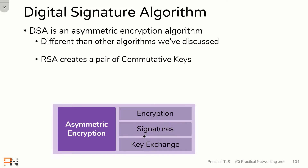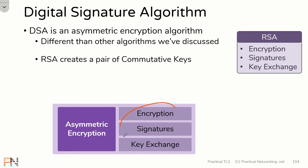Earlier, we talked about the RSA algorithm, and how the RSA algorithm creates a pair of commutative keys — a set of keys where you can encrypt with one and decrypt with the other. RSA can be used for encryption by encrypting a message with the public key and sending it across the wire, and the other side can decrypt it safely with their private key.